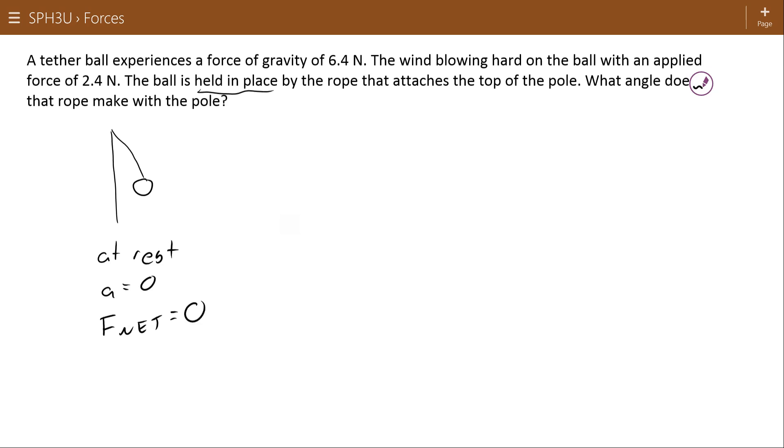So here's our tether ball of mass unknown with an applied force of gravity of 6.4 newtons. And the wind is blowing on the side of this tether ball at 2.4 newtons.